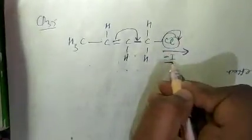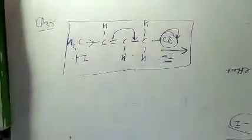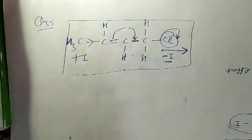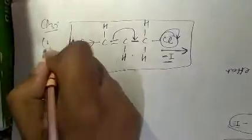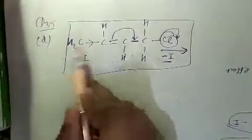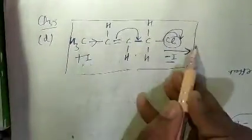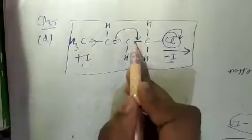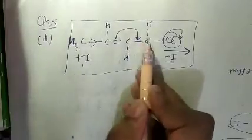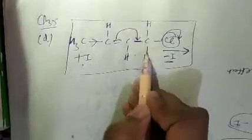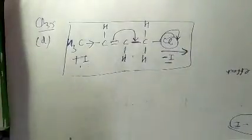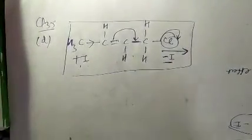CH3 is an electron releasing group acting as a +I group. This is the correct representation of electron displacement, with CH3 releasing (+I) and Cl withdrawing (−I). The pi bond shifts so that carbon forms extra bonds which is unstable, therefore Cl must be removed. So question number 35 option D is correct.